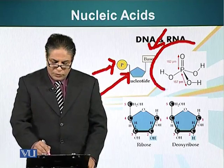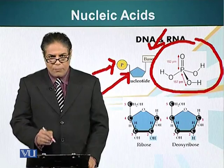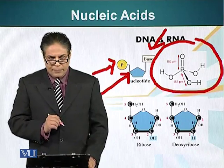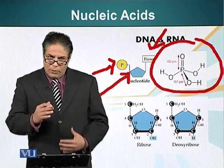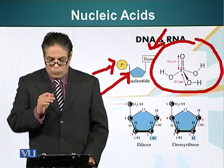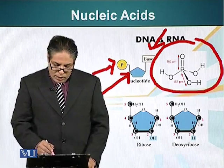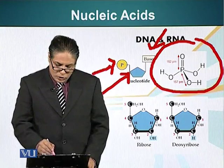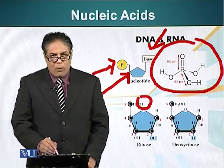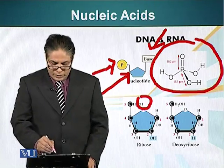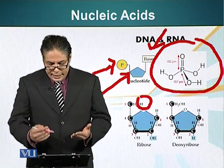Here is the structure of a phosphate group. It is basically phosphoric acid which forms a bond with the pentose sugar. This bond is also an ester bond because it is formed between an acid and an alcohol. The ribose sugar has an OH group, and the phosphate group will form a bond with this hydroxyl group on the carbon — this is an ester bond.